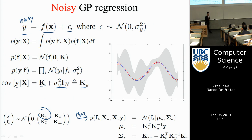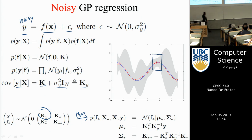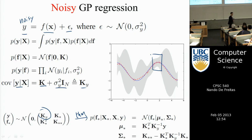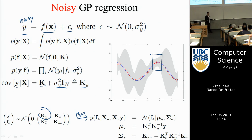When you plot this, you observe that even in regions where there is data, there is still uncertainty. Before, because we assumed no noise, the uncertainty collapsed at the data. Now the uncertainty doesn't collapse at the data, because there's always this error of sigma squared at least — that's the uncertainty in the data. However, we still have the same properties as before: where we have data, less uncertainty; where we don't, greater uncertainty.